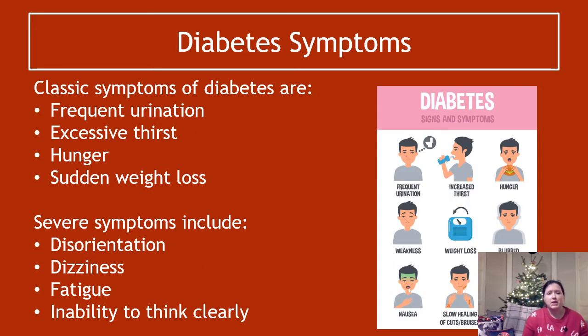General symptoms of diabetes — classic symptoms include things like frequent urination, excessive thirst, hunger, and sudden weight loss.